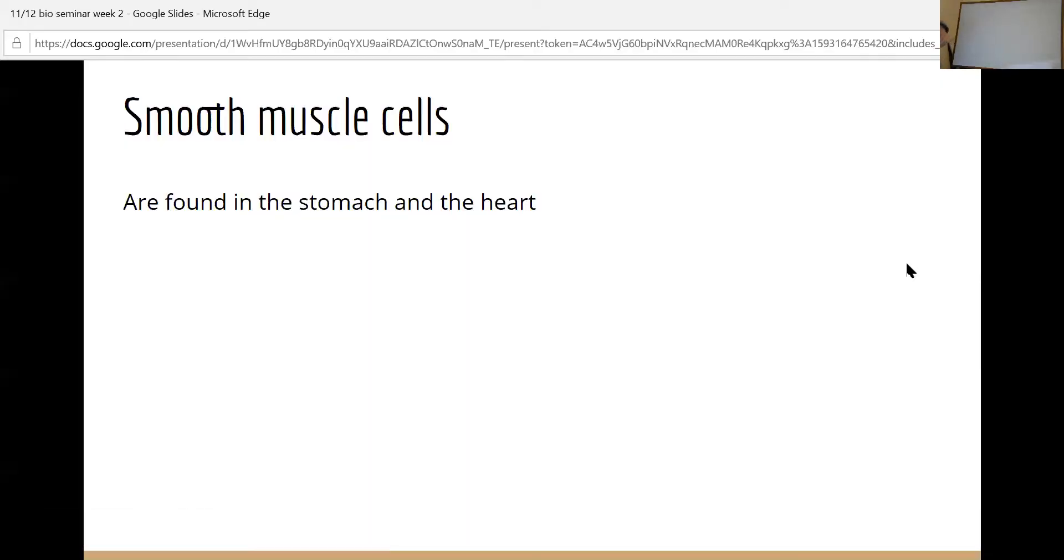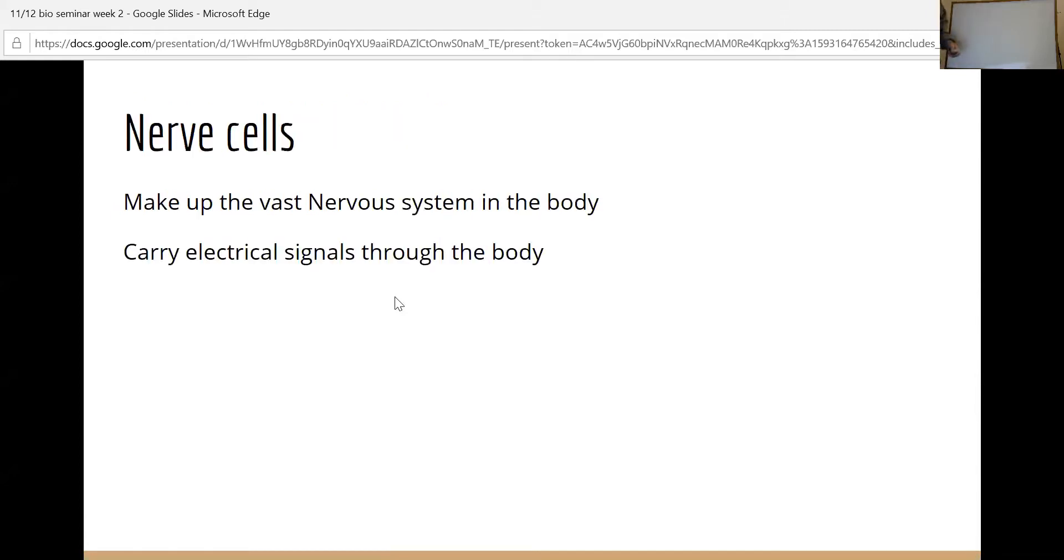Smooth muscle cells are an example of a specialized cell in the stomach and in the heart. They are muscle cells that contract involuntarily. Normal muscle cells I have to voluntarily contract. Smooth muscle cells are not voluntary. If they were, we'd have to manually pump our heart, then we'd probably die. Nerve cells make up the nervous system and carry electrical signals around the body.